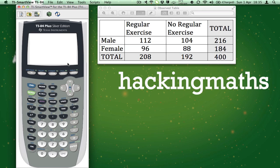Hi, and welcome to another edition of Hacking Maths. Today's lesson is to perform a chi-squared test of independence. This method will calculate the chi-squared value, the p-value, and the number of degrees of freedom. So grab your calculator and follow along with the calculation.